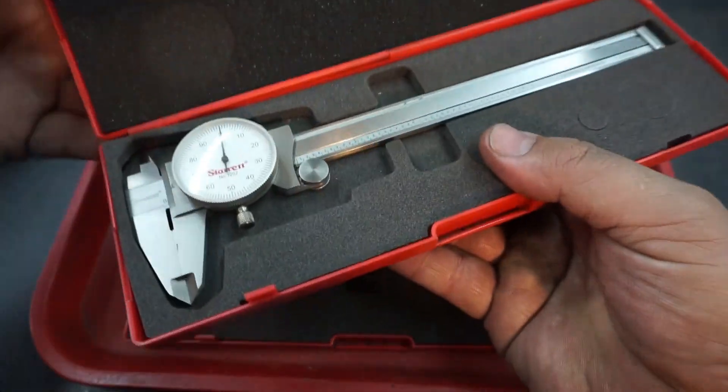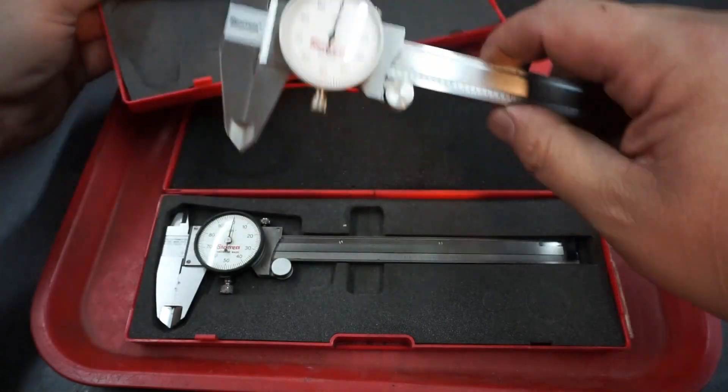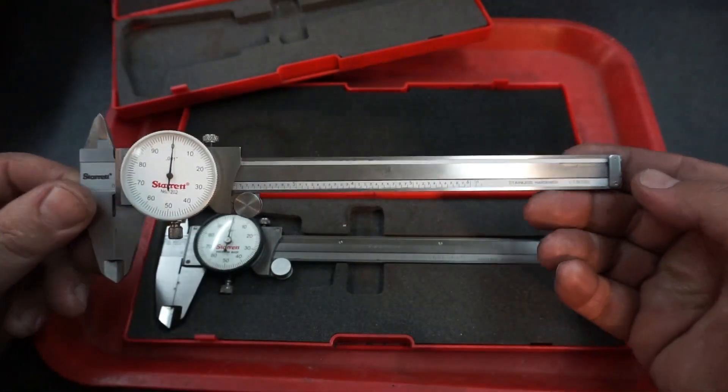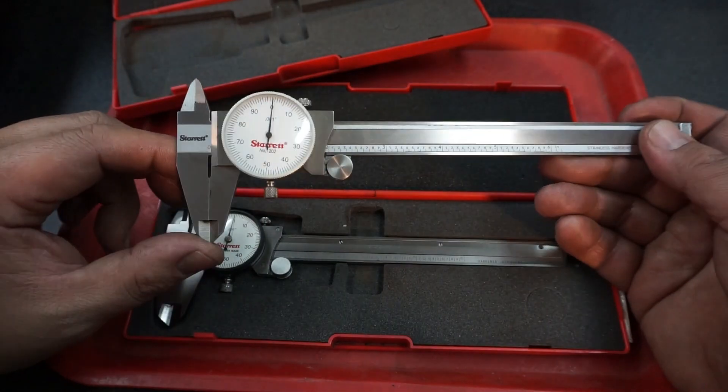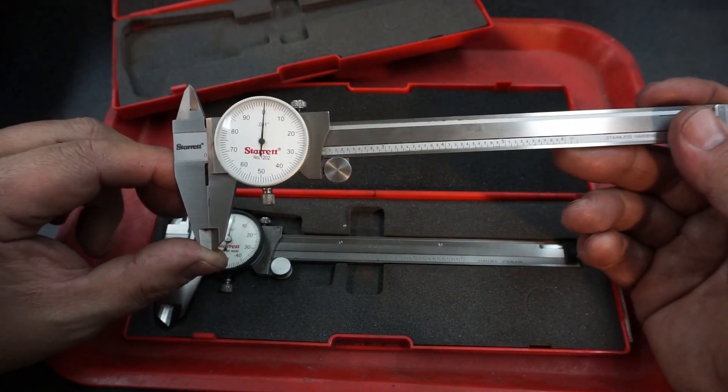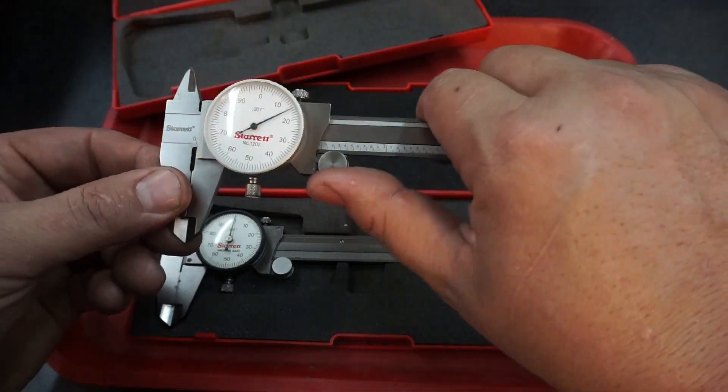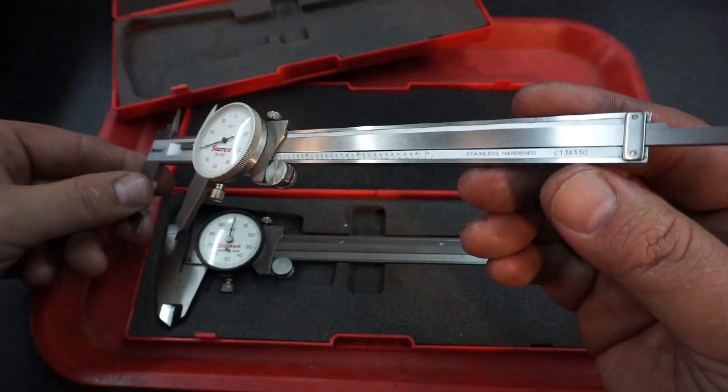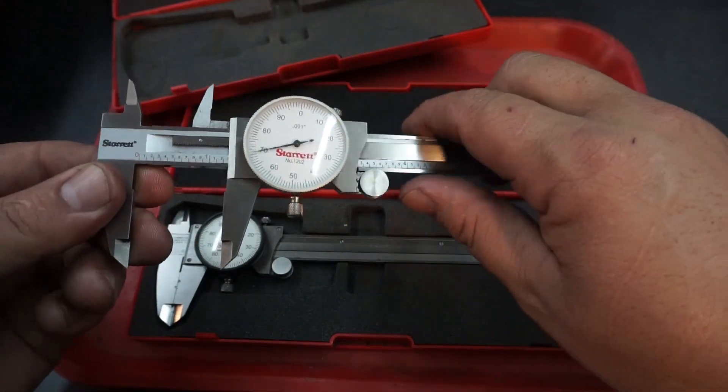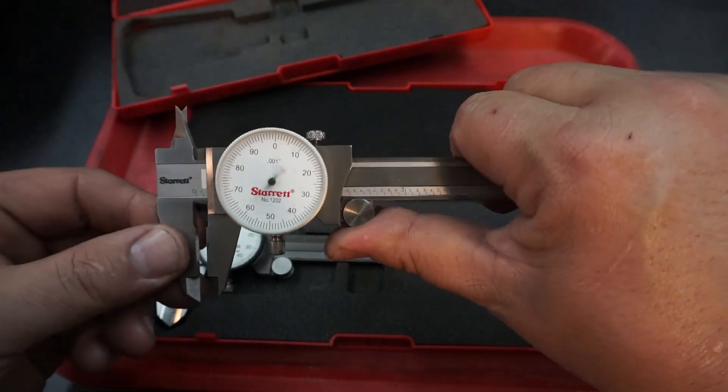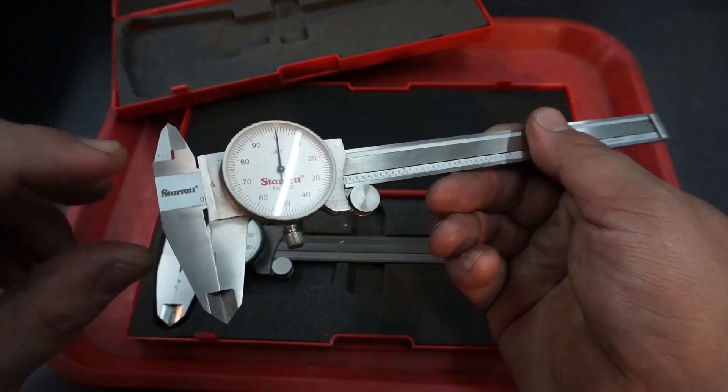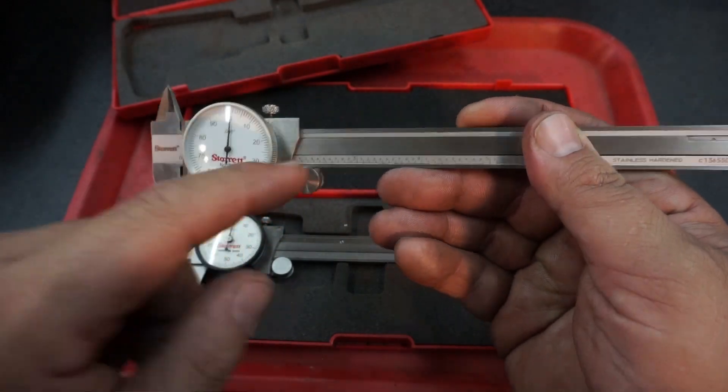So I'll show you a couple more for comparison here. Here is my other Starrett dial calipers that I've showed before. These are the number 1202. These are the ones that I consider the global ones, the import ones from their China facility. They're a good caliper but you see they don't have the four screws on this top plate here where you can remove that.